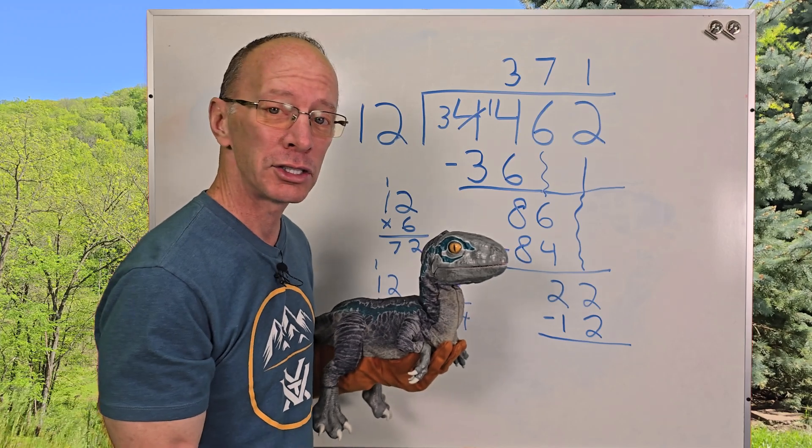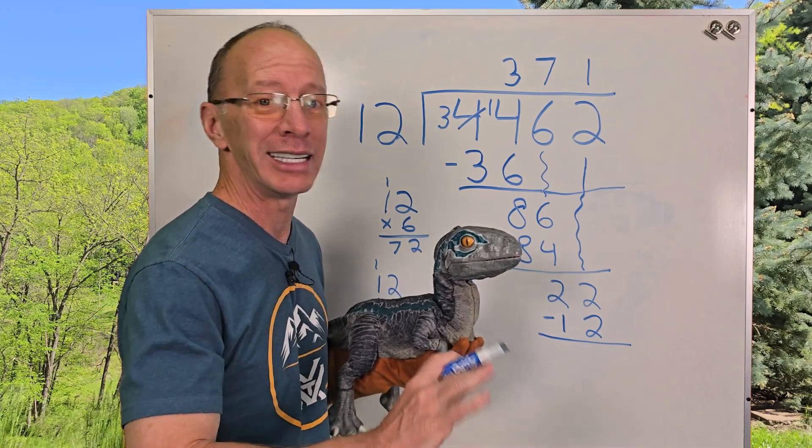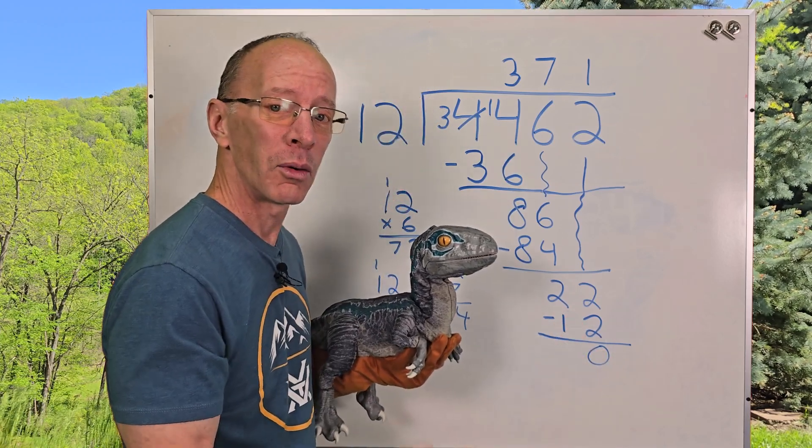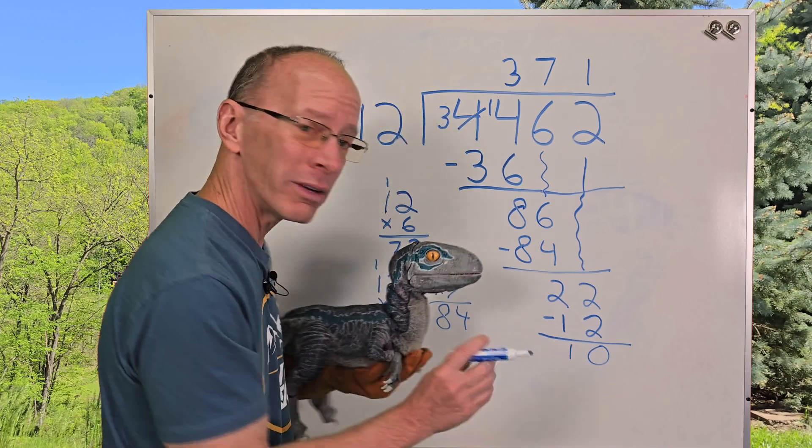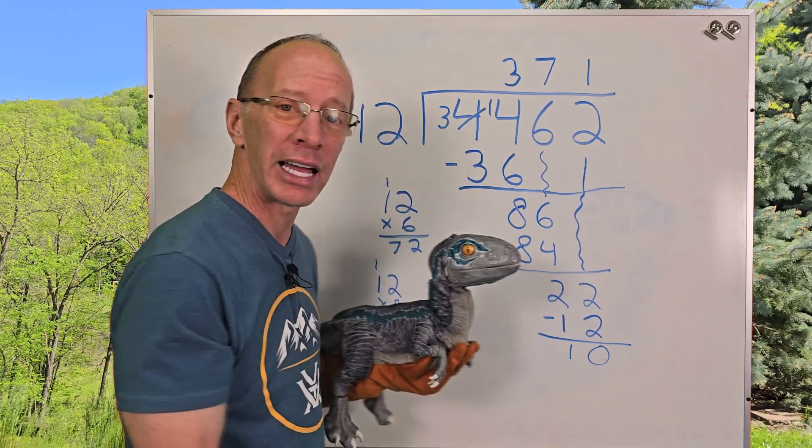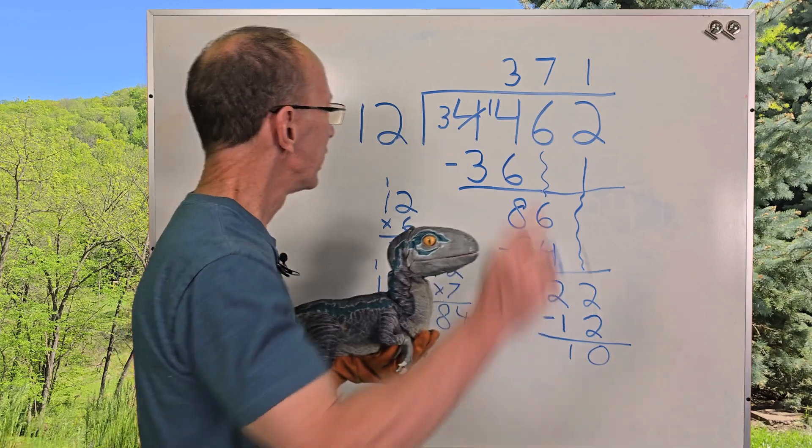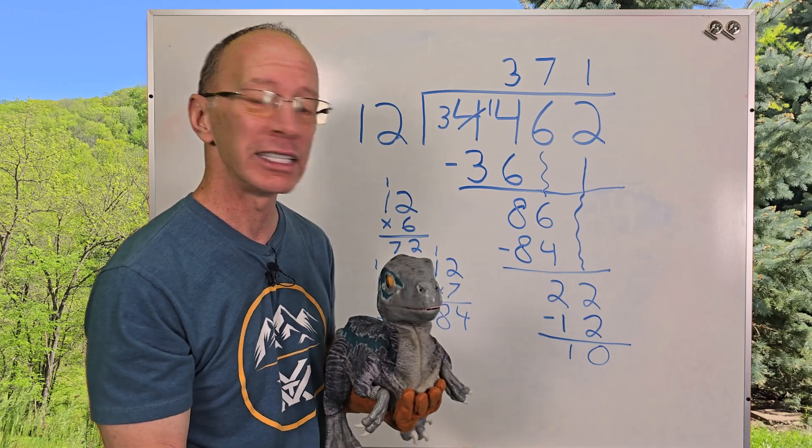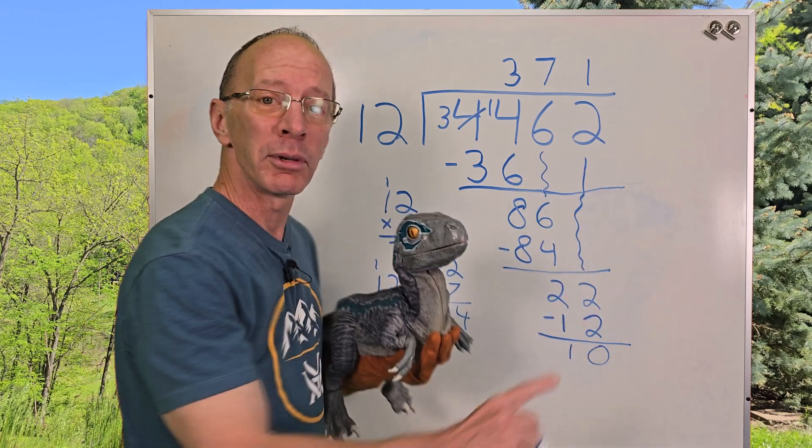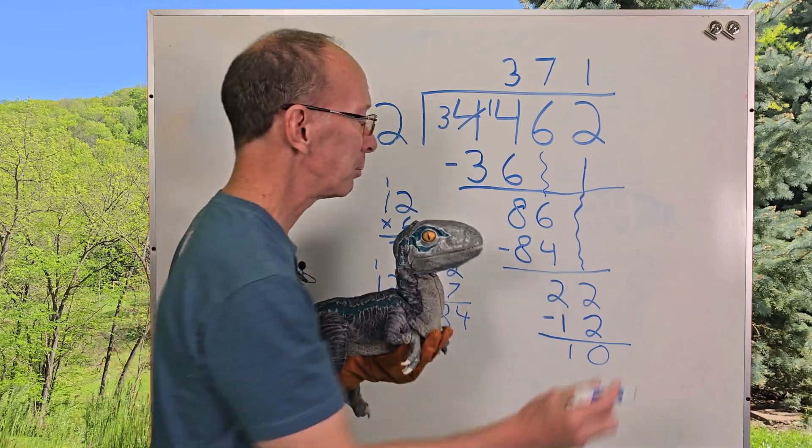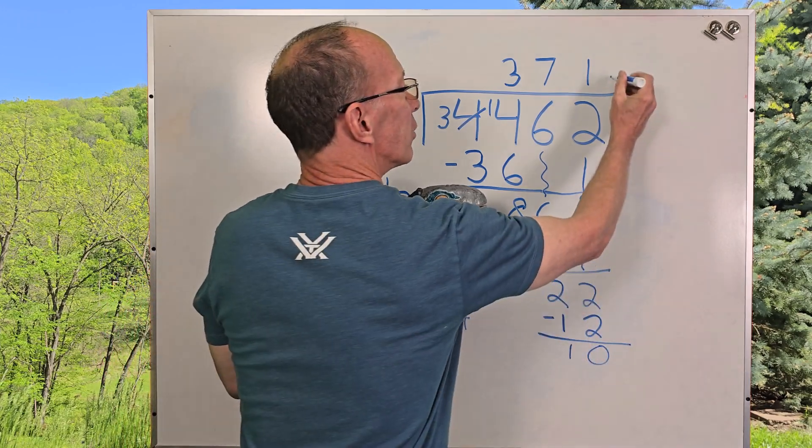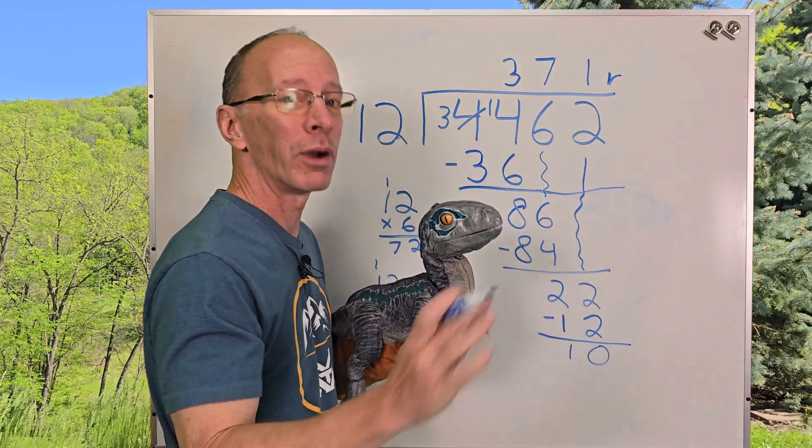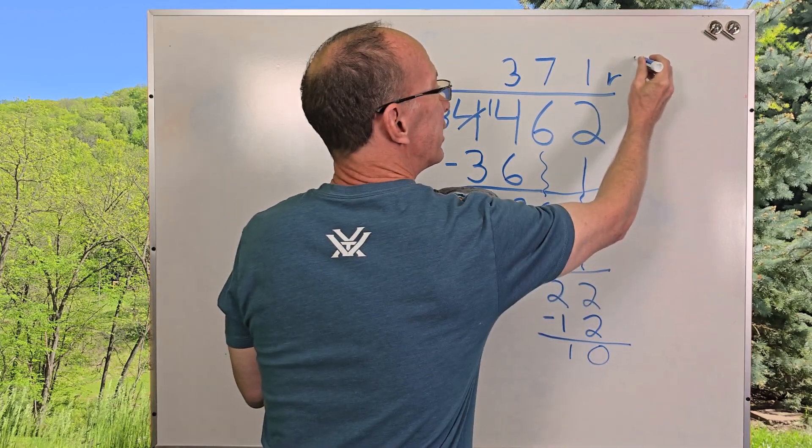2 minus 2 is 0. Zip nada. So I just put a 0 right there. And then 2 minus 1 is 1. Now, don't get worried if you have a double-digit number as a remainder. Can I put 12 into 10? No. Cannot put 12 into 10. So, and there's no other number to drop down. So that's a remainder. So I put a little r right over here. And no, the r is not for raptor. R represents remainder. And then I put 10 right here.